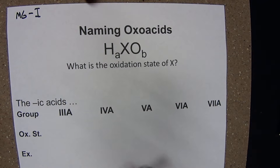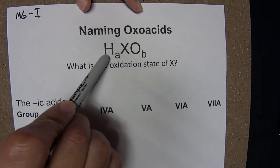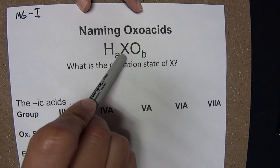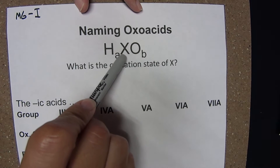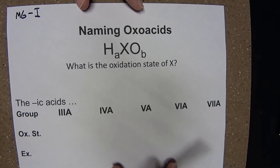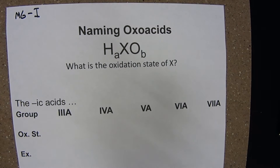Recall oxoacids are compounds that contain hydrogen, oxygen, and some nonmetal X. The key to being able to name oxoacids correctly is being able to identify the oxidation state of X.